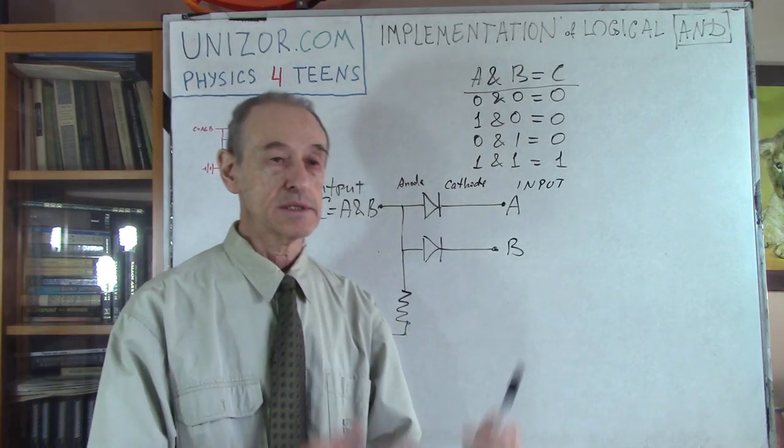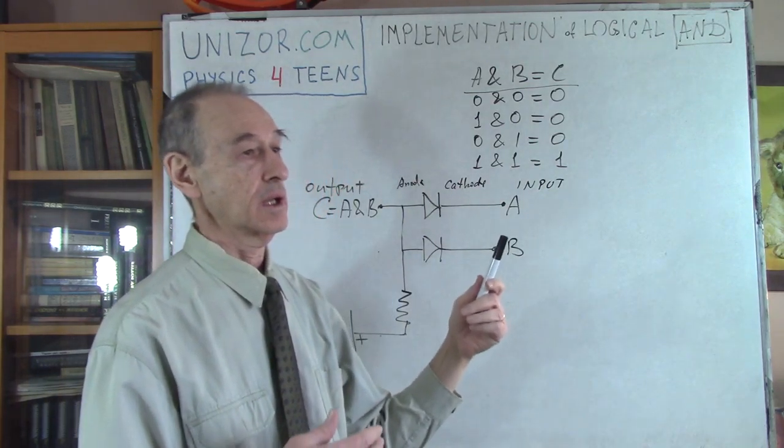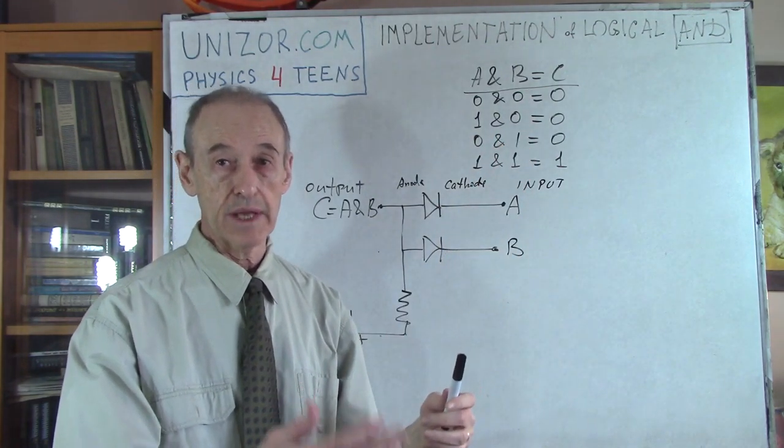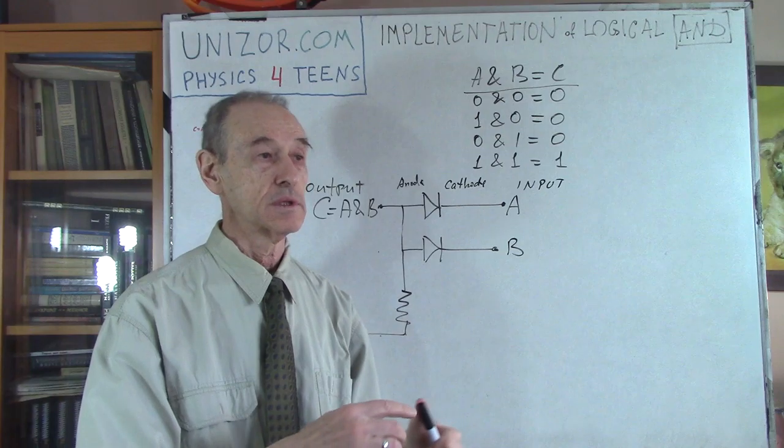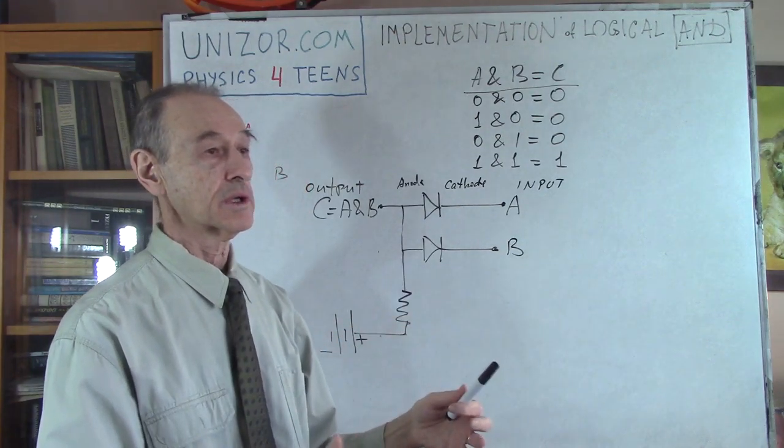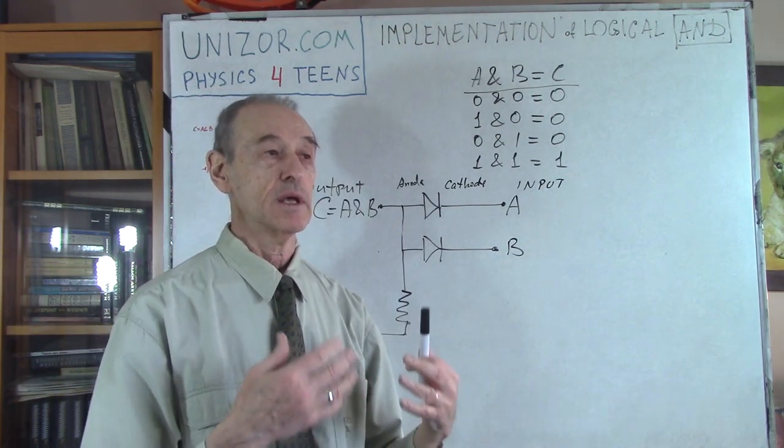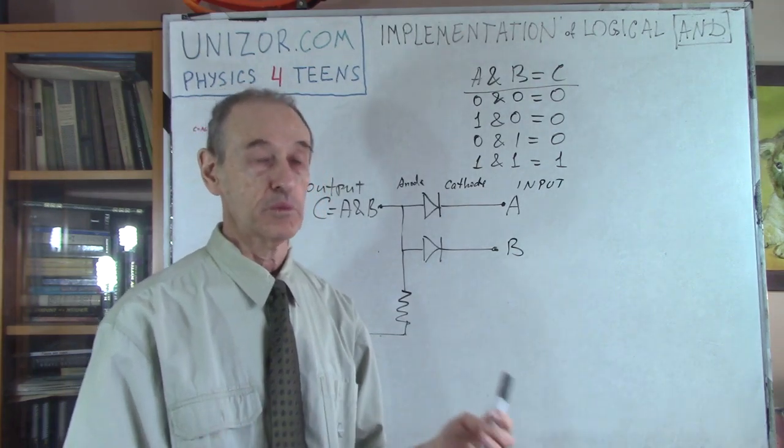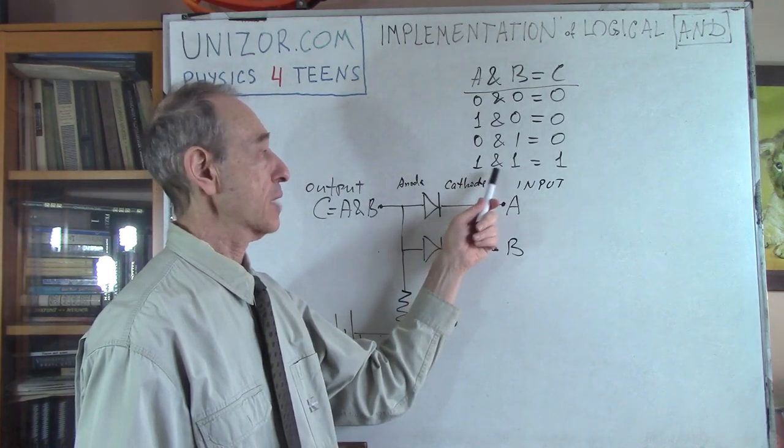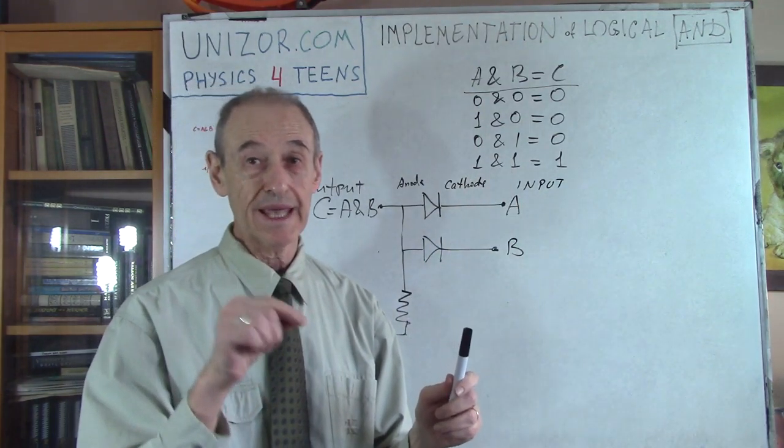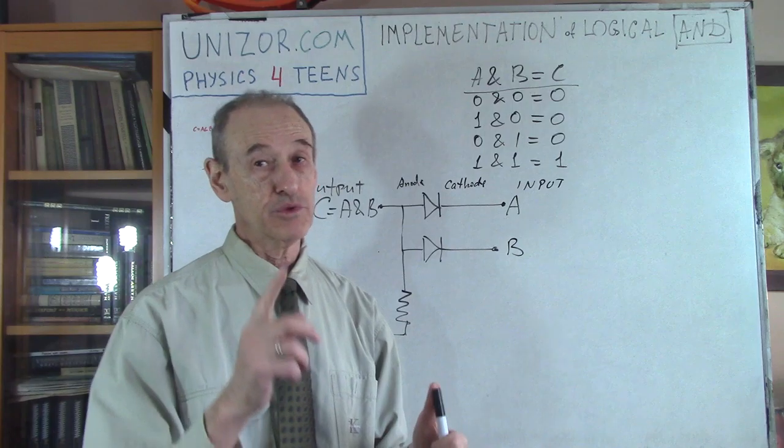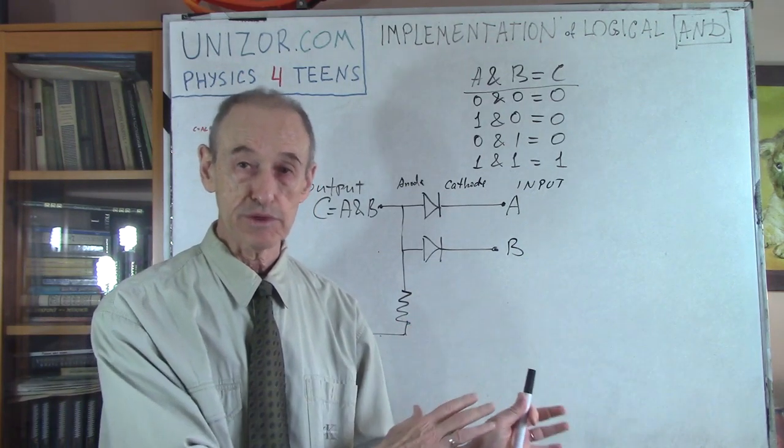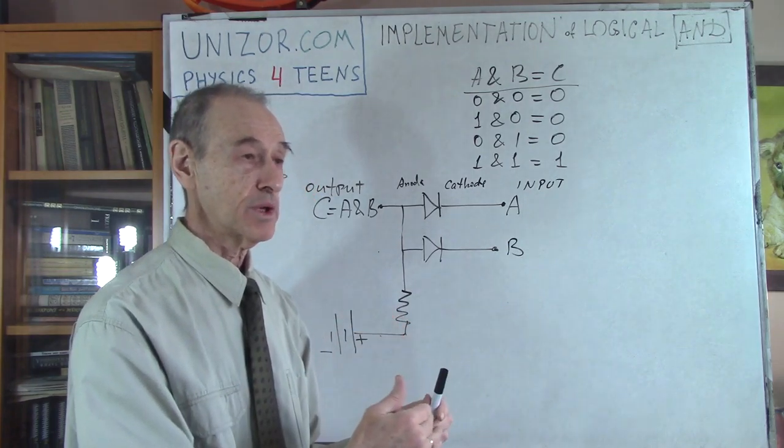For instance, A is something happens or not happens, true or false. B means some other event happens or not happens. If we're talking about a statement like both events A and B happened, when will that be true? Only if one happened and another happened, because I'm using AND not OR. If I'm using A or B happened, that's completely different logic. That's disjunction, that was the previous lecture.